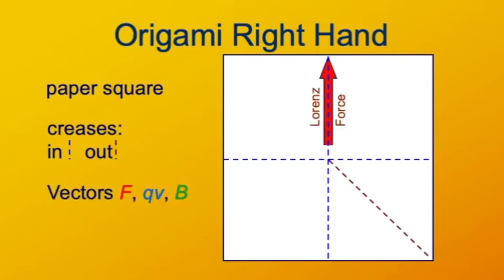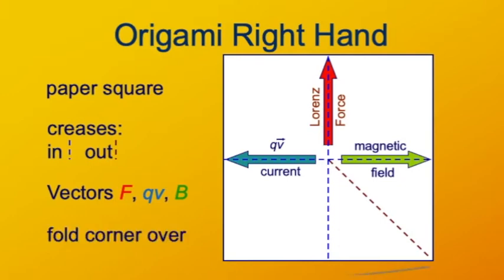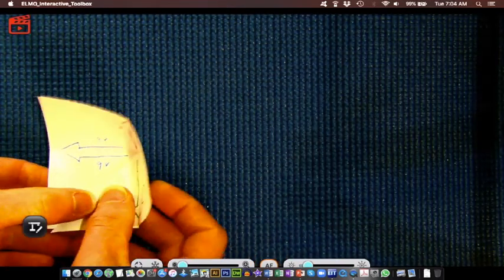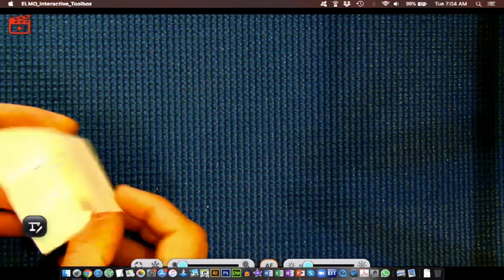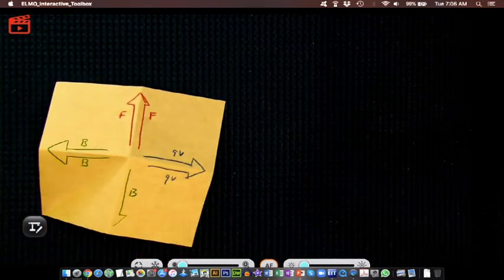To help figure out where the vectors are, mark arrows on the paper. Draw vector F, the Lorentz force, pointing up; vector QV — the charge times the velocity — pointing to the left; and vector B, the magnetic field, pointing right. These vectors are not in the same plane — that's where the folding comes in. Fold the lower right corner to the lower left corner so that it forms a corner cube and the three vectors are perpendicular to each other. Label the reverse side so you can see the vectors no matter which way you're holding the corner cube.